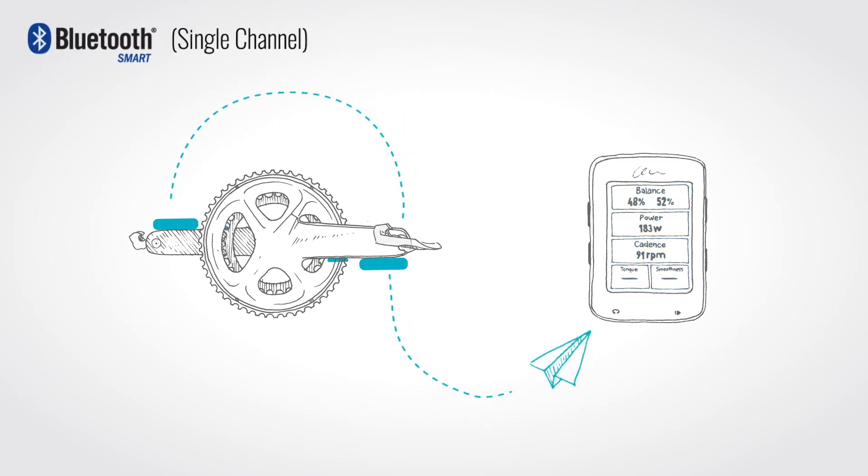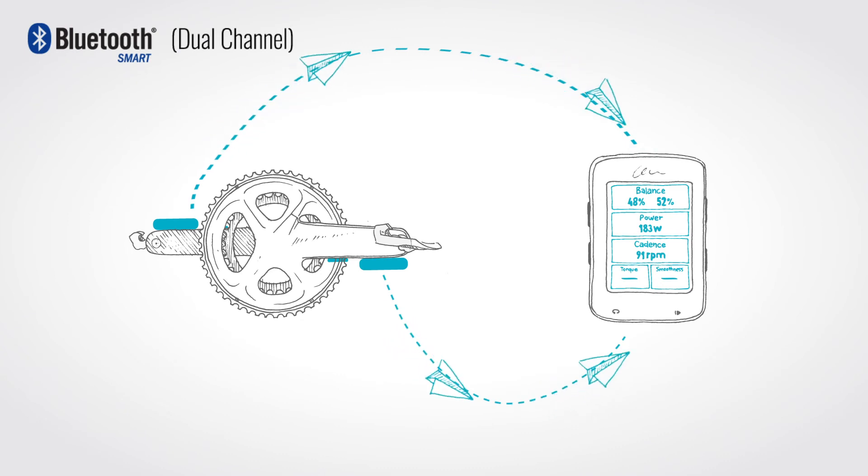Bluetooth signal channel communicates in the same manner as ANT Plus. When using the Bluetooth dual-channel communication method, each comp unit sends its data independently to the head unit.